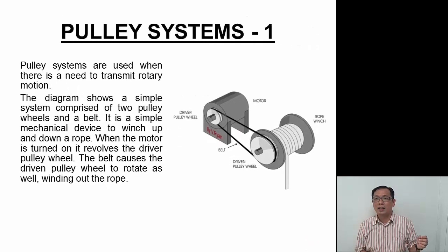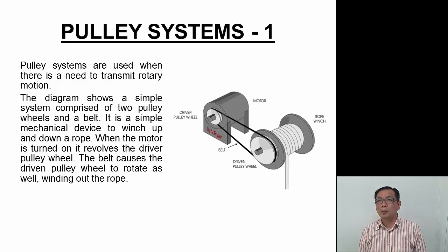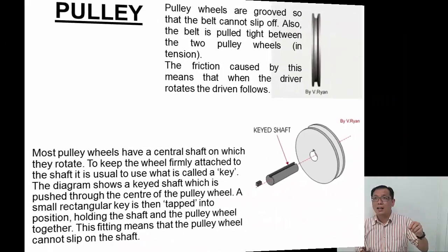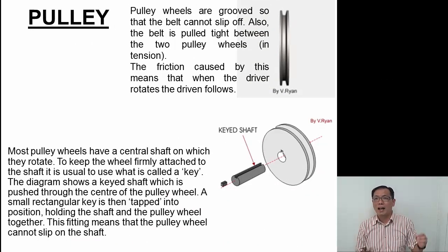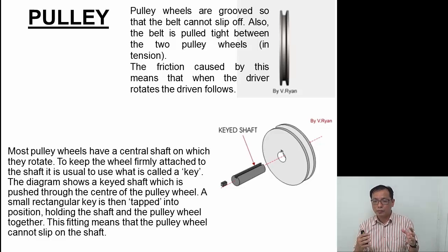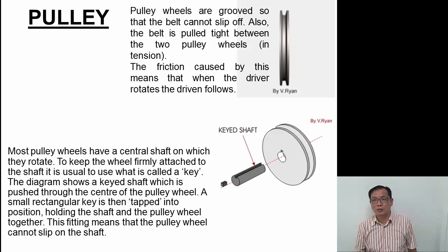For pulley systems, we have a driver pulley that drives a driven pulley through a belt. The pulley wheels are grooved wheels — there's a slot in the center where the belt goes. We also have a key shaft, which is how the shaft is linked to the wheel. A key is inserted to ensure positive engagement between the pulley and the shaft.